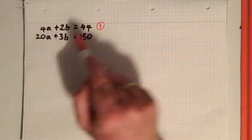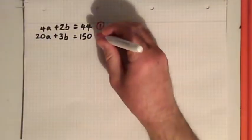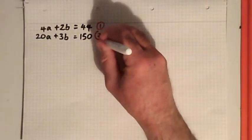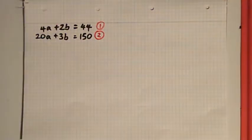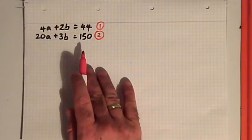4a + 2b = 44, and then the second equation is 20a + 3b = 150. So again, there are infinite solutions.